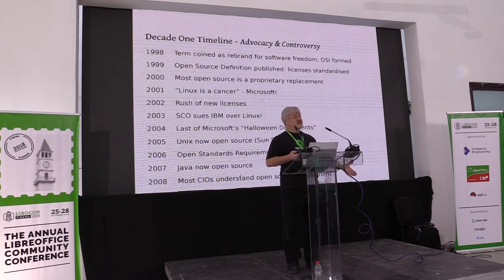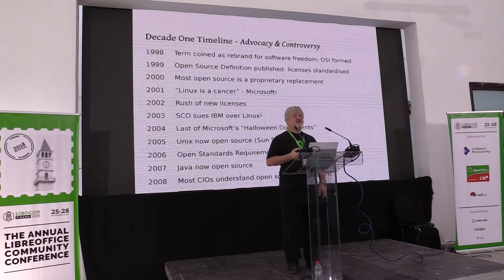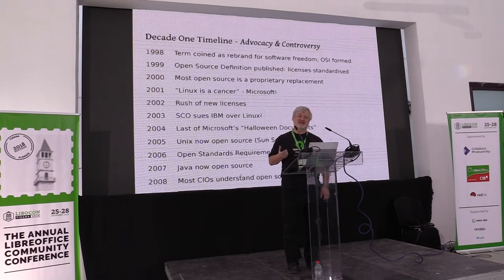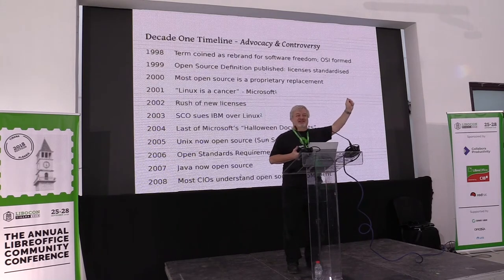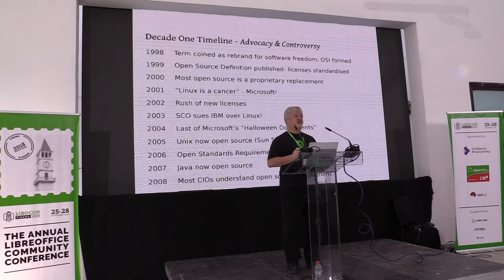The open source definition was published in 1999 and was created by Bruce Perens. He was the author of the Debian free software guidelines, and he was in the middle of writing the Debian free software guidelines when they said they needed an open source definition. And so the two things were absolutely identical to what they wanted. They have diverged somewhat since, but they are still close enough to treat them as if they are the same thing.